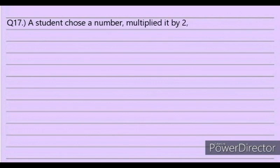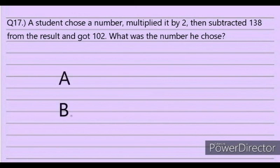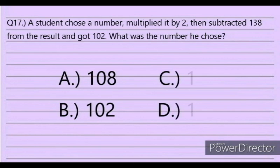Question 17. A student chose a number, multiplied it by 2, then subtracted 138 from the result and got 102. What was the number he chose? Answer choices: A. 108, B. 102, C. 106, D. 112.